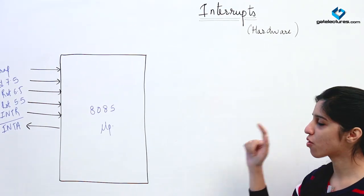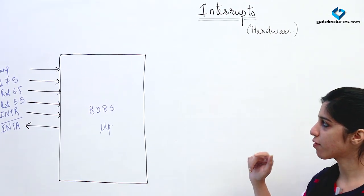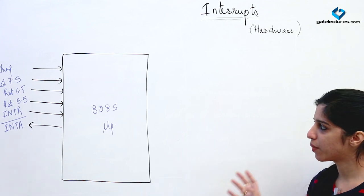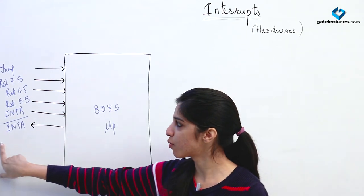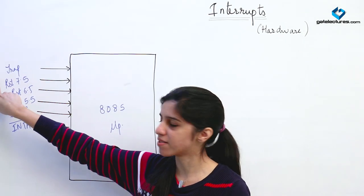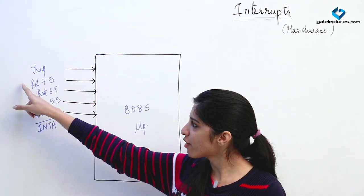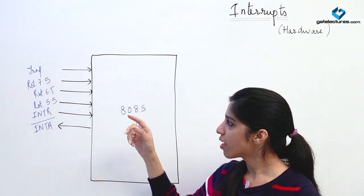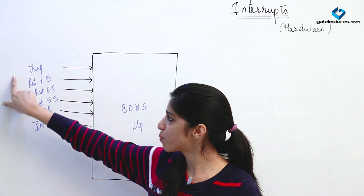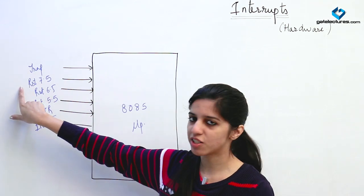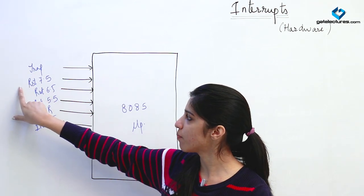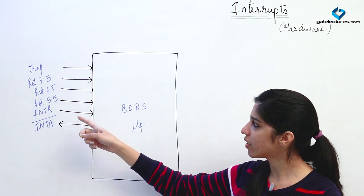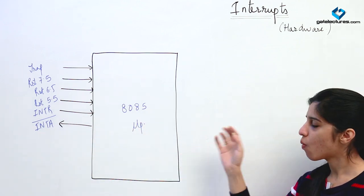Today we are going to look at interrupts of the 8085 microprocessor. There are several hardware interrupts — these interrupts are going to have pins. There are going to be 5 external pins of the microprocessor. If you connect these pins to VCC, that is if you give them signal 1, then these pins are going to be active and you are going to raise a hardware interrupt.